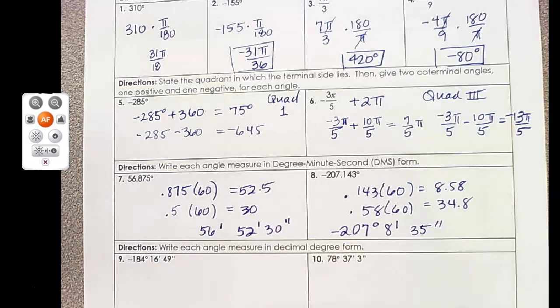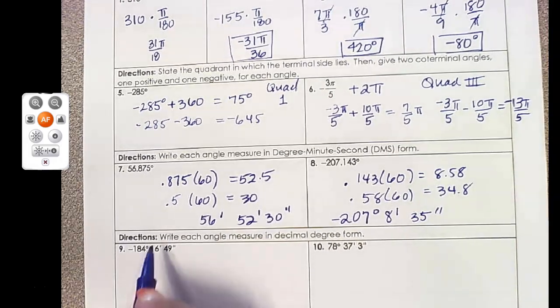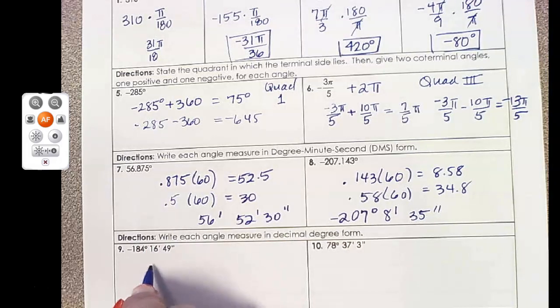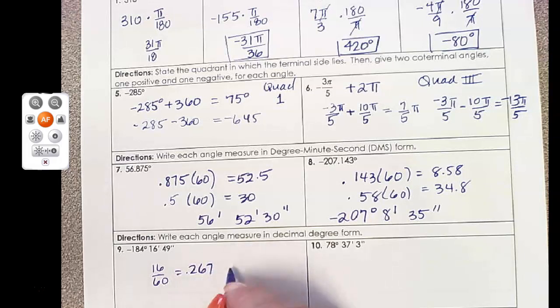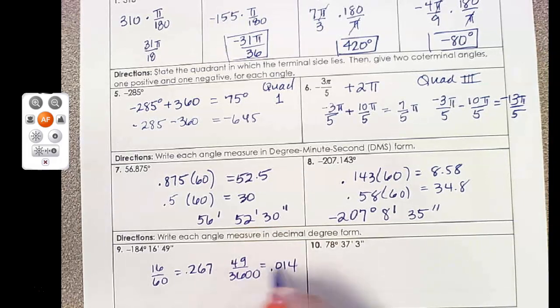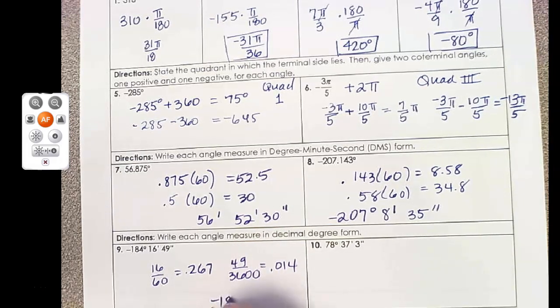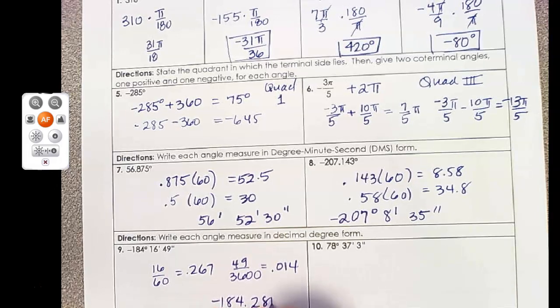Then to go the opposite way, you're going to take your minutes and divide by 60. You're going to take your seconds and divide by 3,600. You're going to add those two together, and you get negative 184.281 degrees.